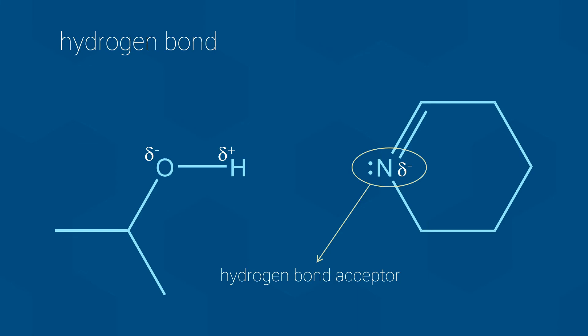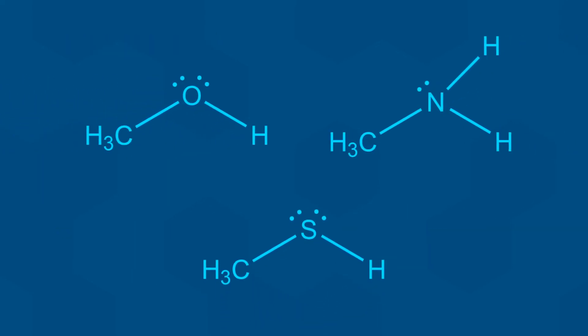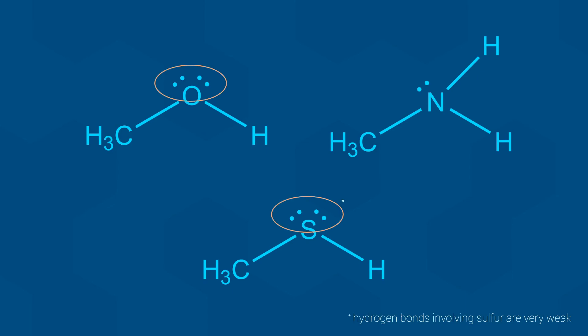And by the way, if you are wondering which atoms have lone pairs of electrons available for hydrogen bonding, we only have to worry about three of them. Oxygen and sulfur usually have two lone pairs of electrons available to accept hydrogen bonds, while nitrogen usually has one.